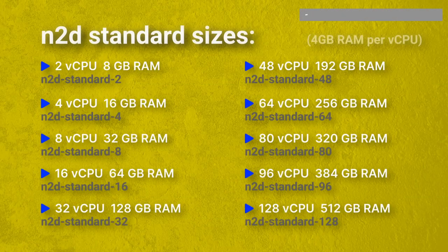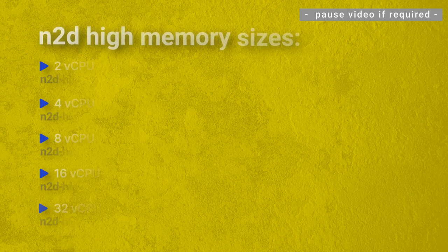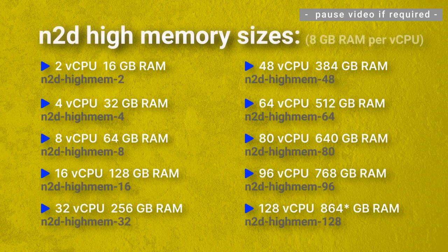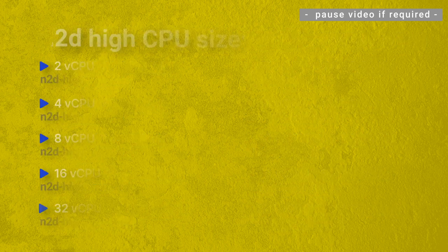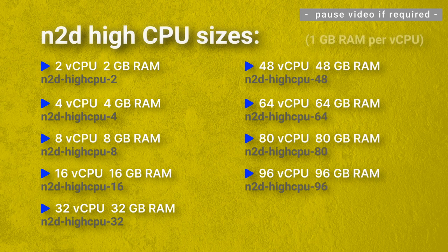N2D standard instances include 4 GB of RAM per vCPU. N2D high memory instances have 8 GB of RAM per vCPU. N2D high CPU instances have 1 GB of RAM per vCPU.